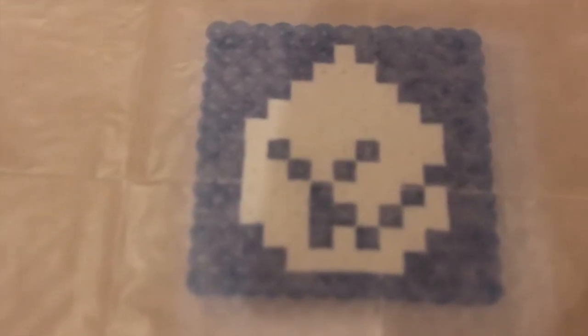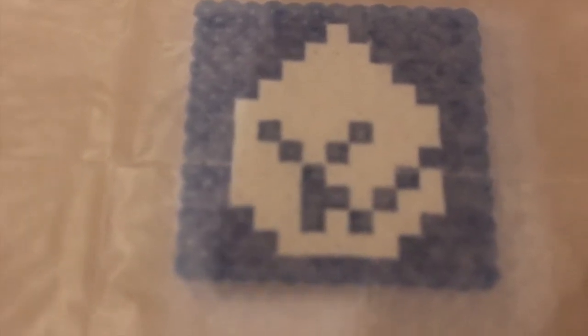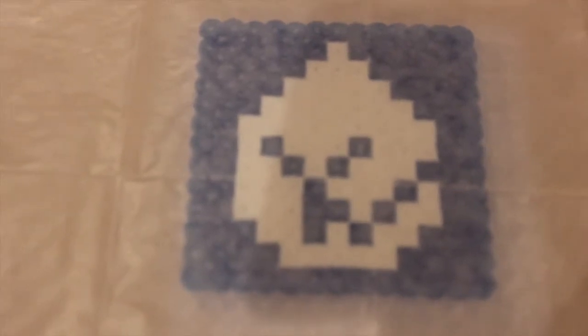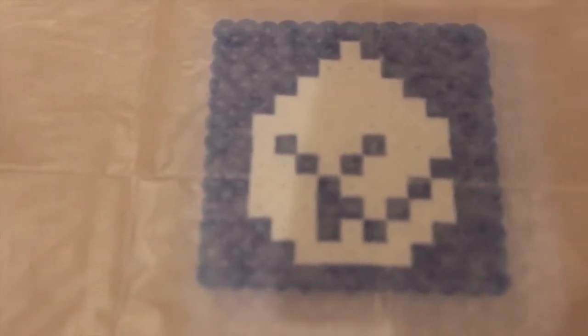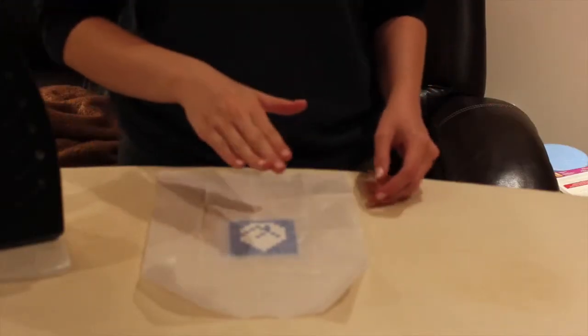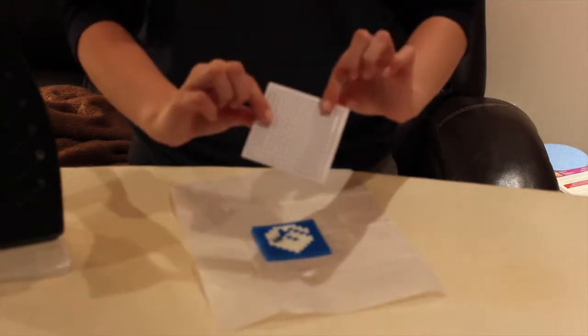So that's about what you want it to look like as far as it being melted for one side. Now that you've melted one side of your beads, you're going to flip it over and take off your pegboard. You don't need that anymore.